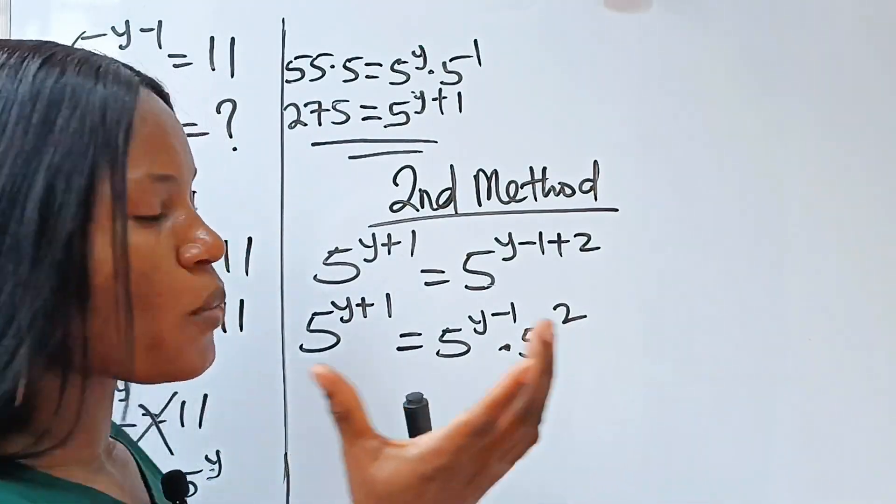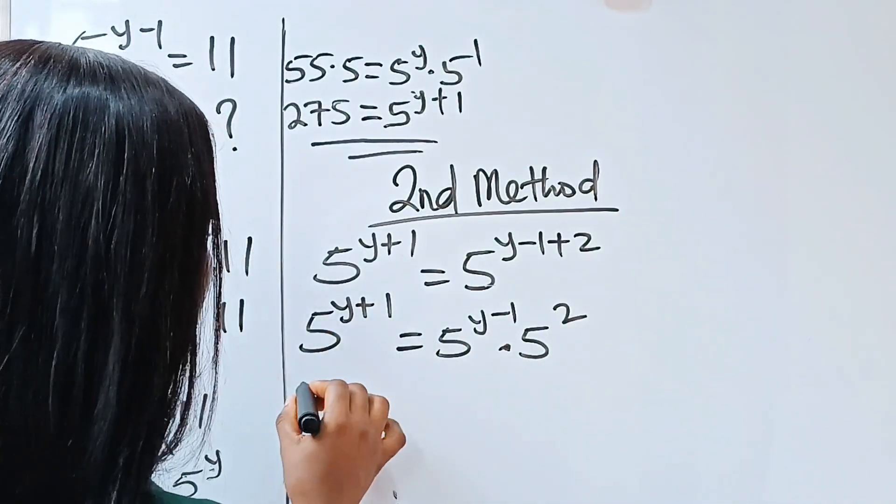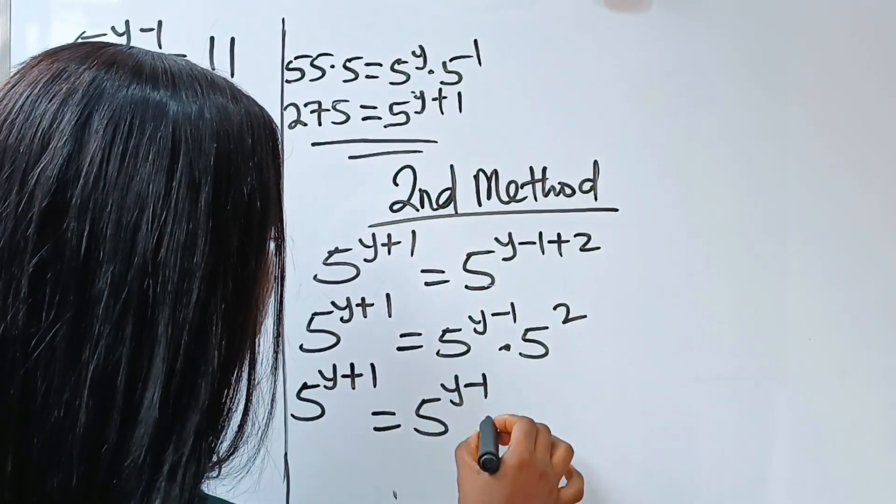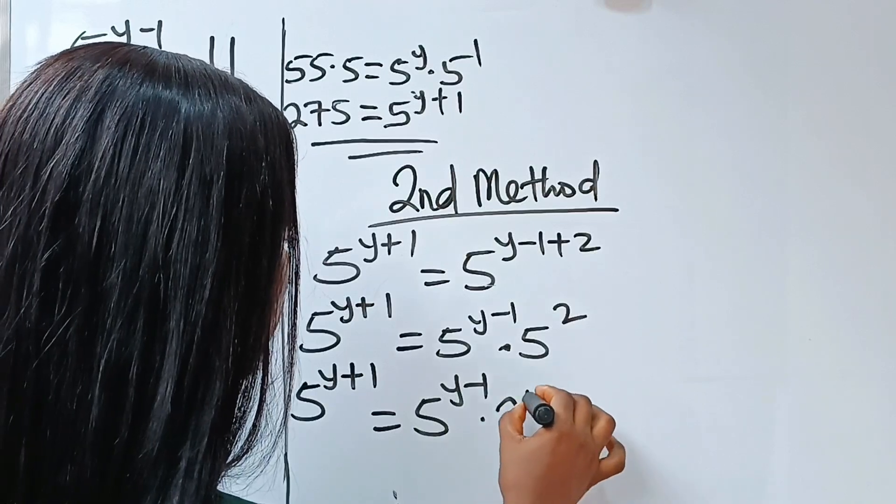Now, when you look at this closely, we have gotten our solution already. So we have 5 to the power of y plus 1 is equal to 5 to the power of y minus 1 multiplied by 25.